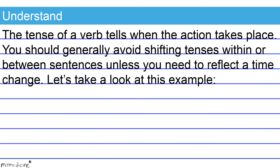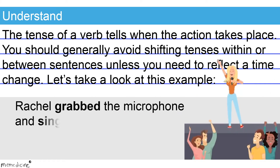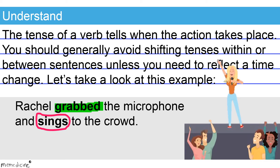Check out this second example: Rachel grabbed the microphone and sings to the crowd. There is no need to reflect a time change, so both verbs should be in the same tense. The first verb, 'grabbed,' is written in the simple, singular, past verb tense, so we know the singing also took place in the past. However, the second verb, 'sings,' is written in the simple, singular, present verb tense. There is no need to reflect a time change, so this creates inconsistency in the overall tense of the sentence.